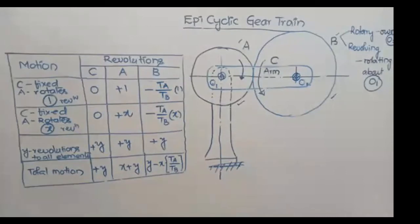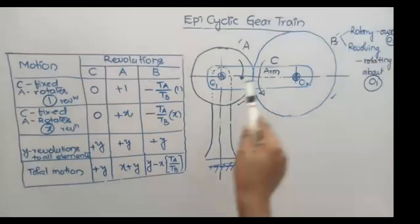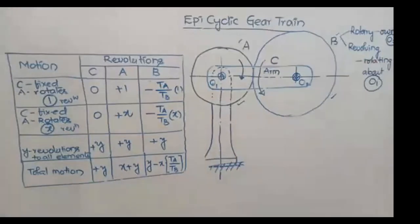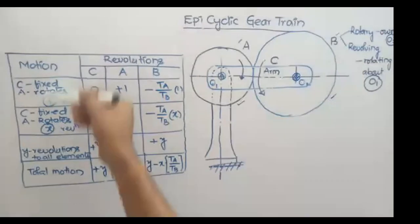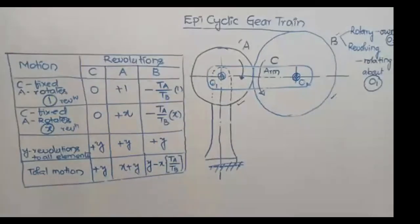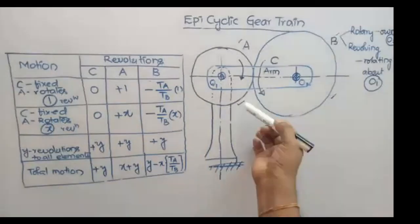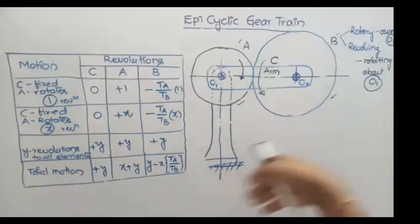Look at the figure here. This shows different types of motions considered for different elements in this epicyclic gear train. We have three elements: gear wheel A, gear wheel B, and arm C. By giving different motions to these three elements, you can get different types of motions. Based on this, we can study the motion of this epicyclic gear train and calculate the velocity ratio. First, you assume that the arm is fixed — arm C is fixed and is not free to rotate about its center. If arm C is fixed, it completes zero revolutions.